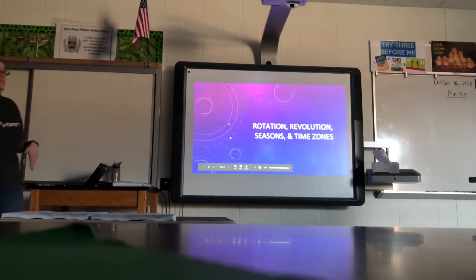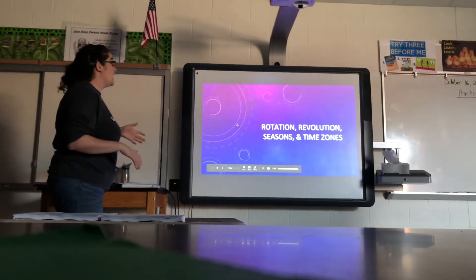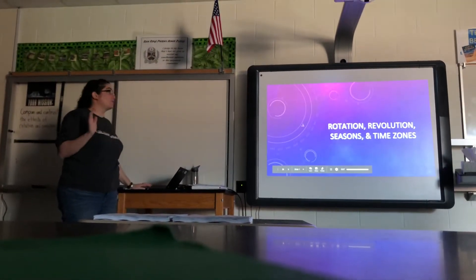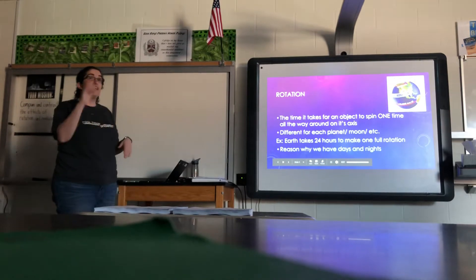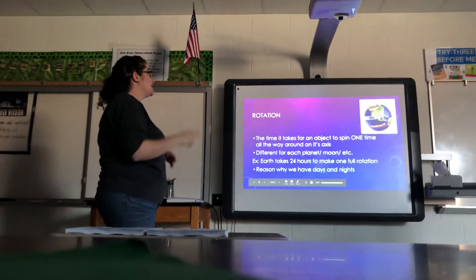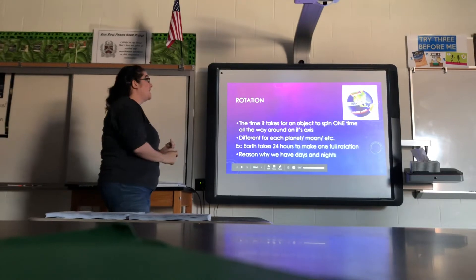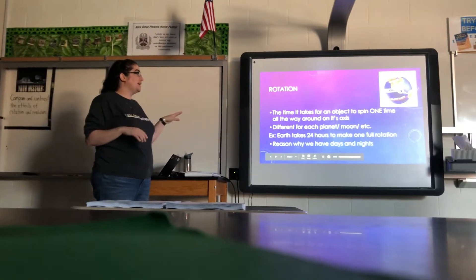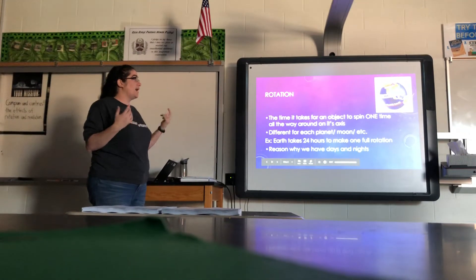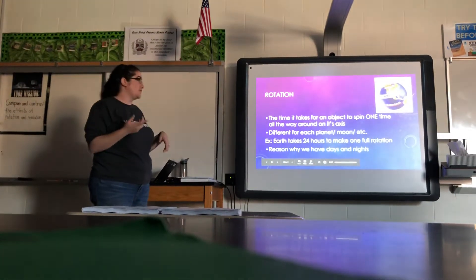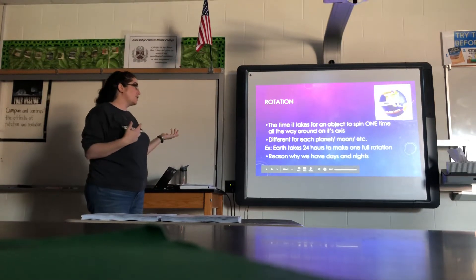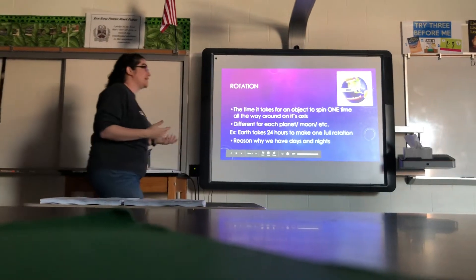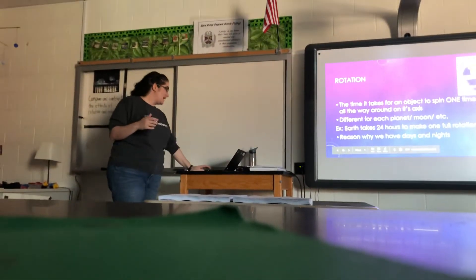Rotation, revolution, seasons, and time zones — all of these things you've covered before and we're going to cover them today just to make sure we're confident about them. Rotation is the spinning that causes days and what makes the sun appear to move in the sky. Our planet rotates 365 times in a year, taking 24 hours to complete one rotation, which is why we have days and nights. This is also one of the reasons why we have time zones.